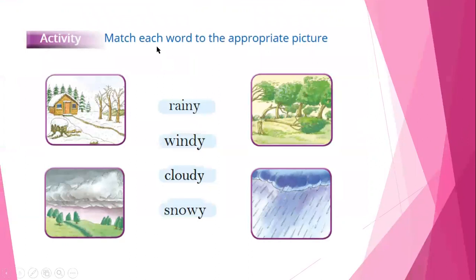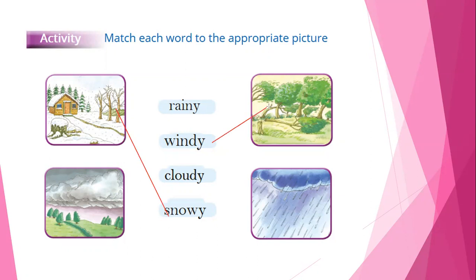Now let's do this activity. Match each word to the appropriate picture: rainy, windy, cloudy, and snowy. Let's do it together. This picture — snowy. This one — windy. And cloudy and rainy.